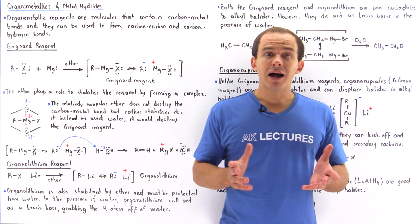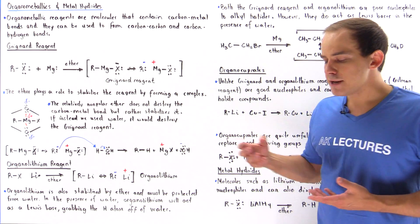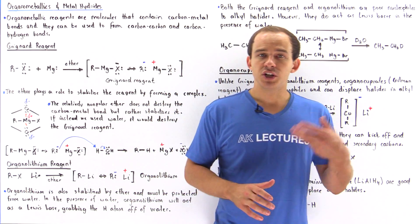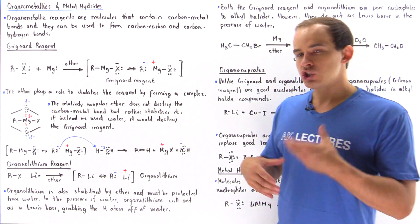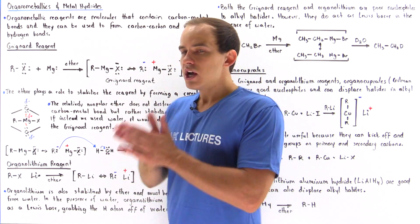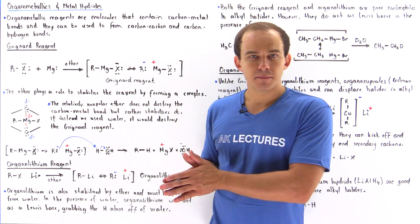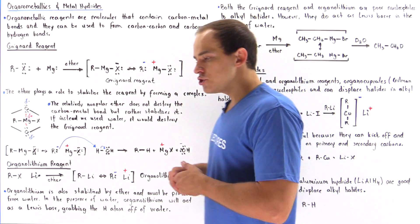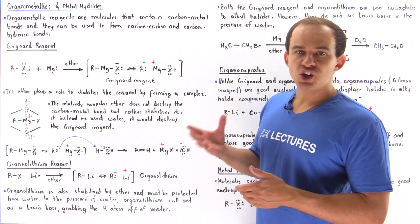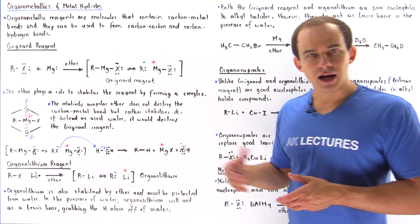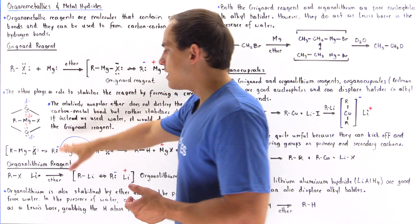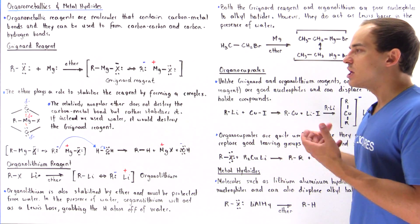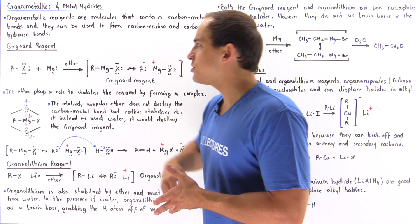Organometallic reagents are molecules that contain bonds between carbon and metal atoms. These organometallic reagents can be used to form bonds between carbon and hydrogen atoms and between two carbon atoms. So basically we can form carbon-hydrogen bonds and carbon-carbon bonds using these organometallic reagents. Let's begin our discussion with two types of reagents that can be used to form carbon-hydrogen bonds: the Grignard reagent and the Organolithium reagent.